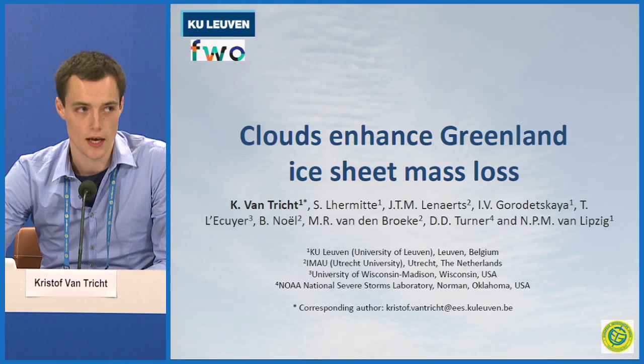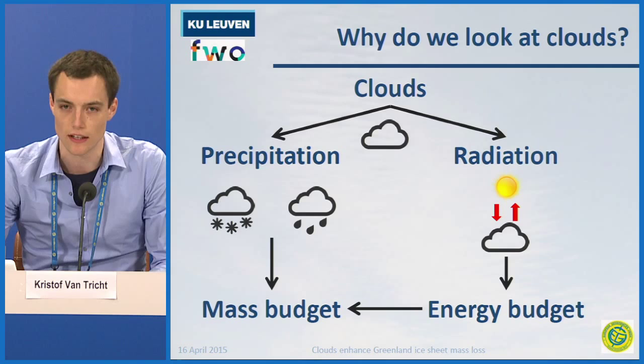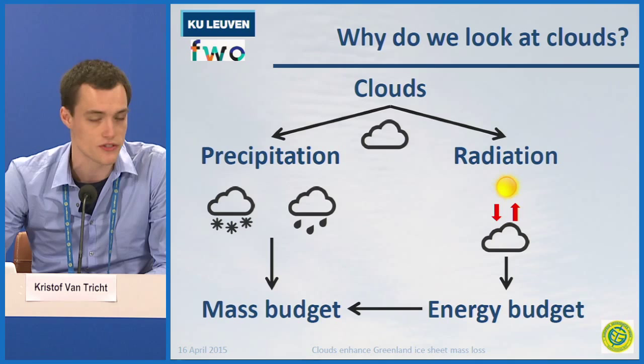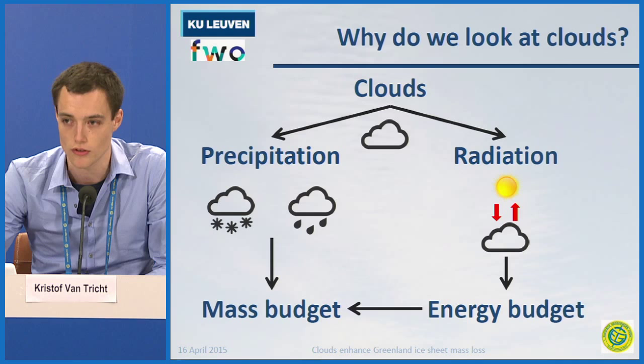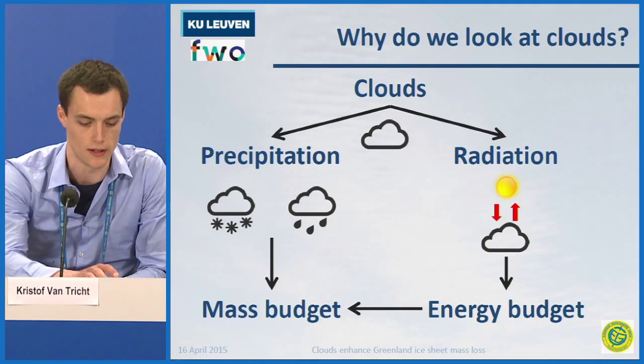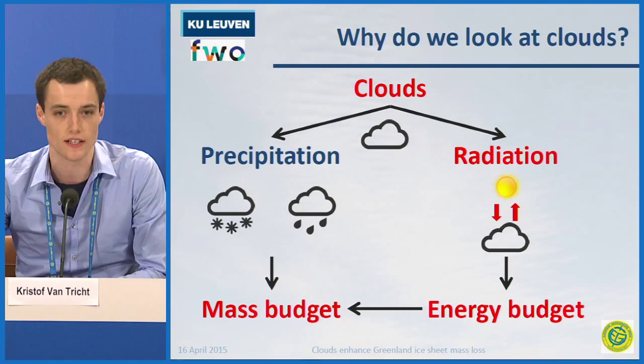Why are we interested in clouds over the ice sheet? Because of the very large impact of clouds in the climate system. This impact is twofold: the most obvious role is their source of precipitation, contributing to the surface mass balance of the ice sheet. But clouds also influence the energy budget of the surface, and this also affects the surface mass balance. It's actually this second very important role that we have been investigating over the Greenland ice sheet.